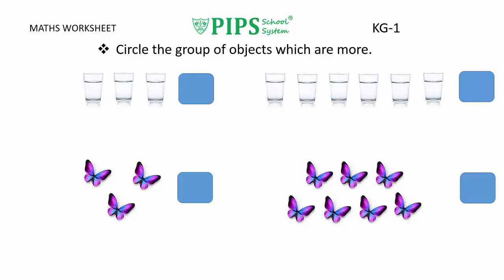Assalamu alaikum KG1 students, hope you all are fine. Today our topic is: circle the group of objects which are more. KG1 students, first of all, all of you take your pencil and complete this task with me. Ok students, let's start.